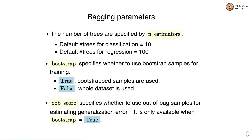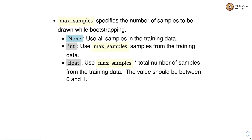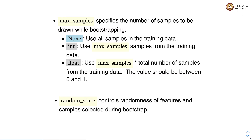oob_score specifies whether to use out-of-bag samples for estimating generalization error, and is only available when bootstrap equals true. max_samples specifies the number of samples to be drawn while bootstrapping — if none, all samples in the training data are used; if integer, that many samples are used; if float, max_samples times total number of samples are used, and the float value should always be between 0 and 1. random_state controls the randomness of features and samples selected during bootstrap.